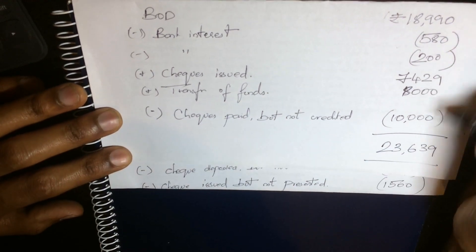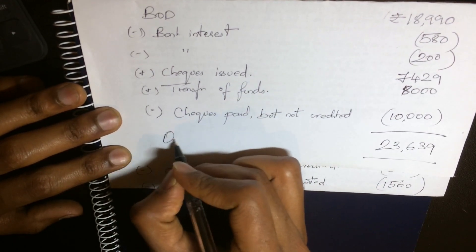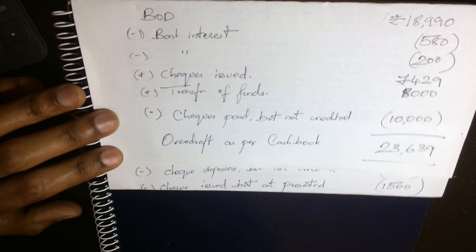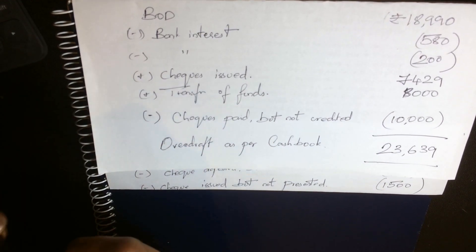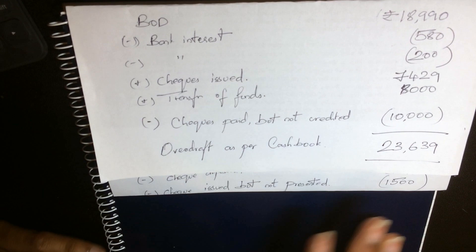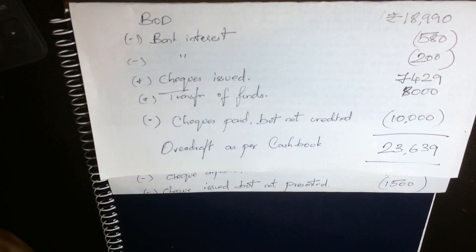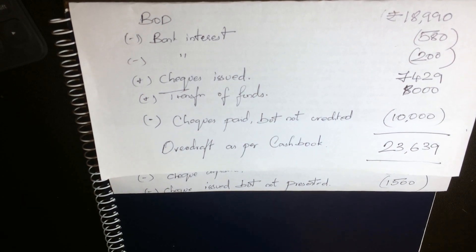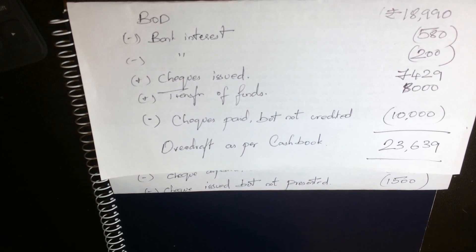So the largest number is the overdraft as per the cash book. You can verify the answer: the overdraft as per cash book and the overdraft as per pass book should reconcile. With this simple bank reconciliation statement format, you can prepare the statement easily.